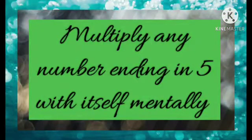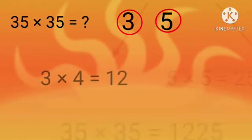How to multiply any number ending in 5 with itself mentally. Multiply 35 by 35. Divide 35 into two parts.